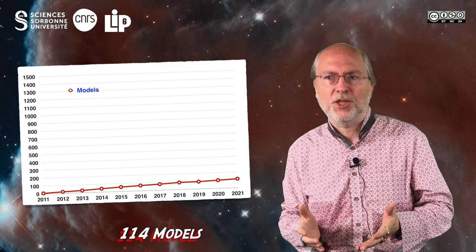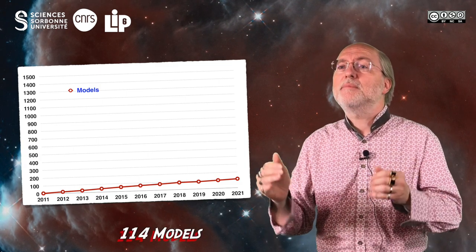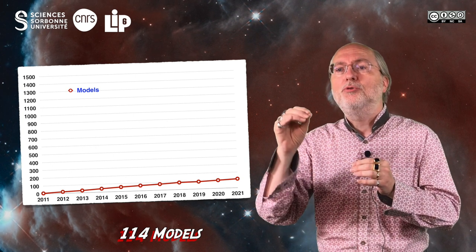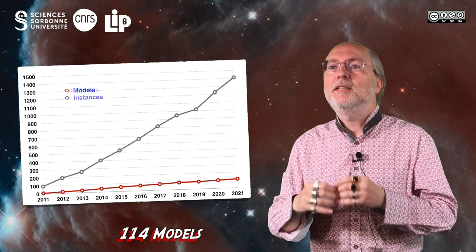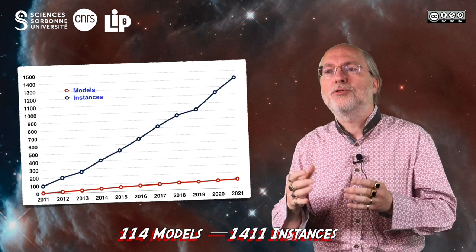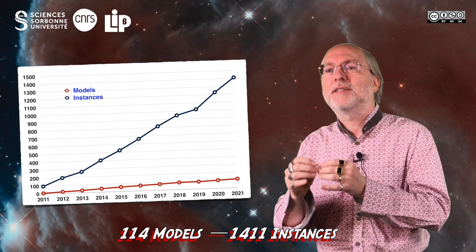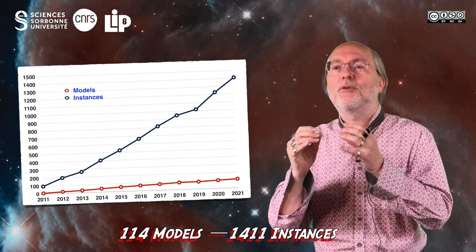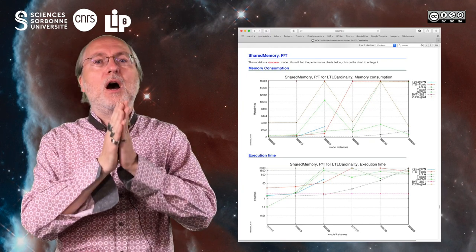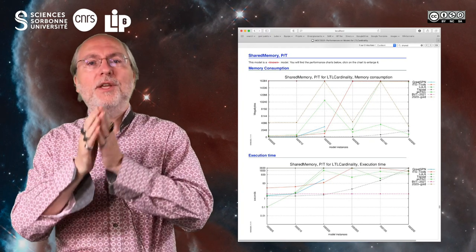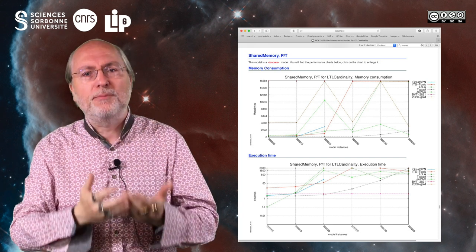Year after year, our model database is growing and now contains 114 different specifications. Many of them are parametrized and can be declined into several instances having various complexities. In 2021, each tool was confronted with 1411 variants of these 140 models. We call variants of a given model instances, which are a good way to observe how a tool can cope with an increasing complexity of a given parametrized model.